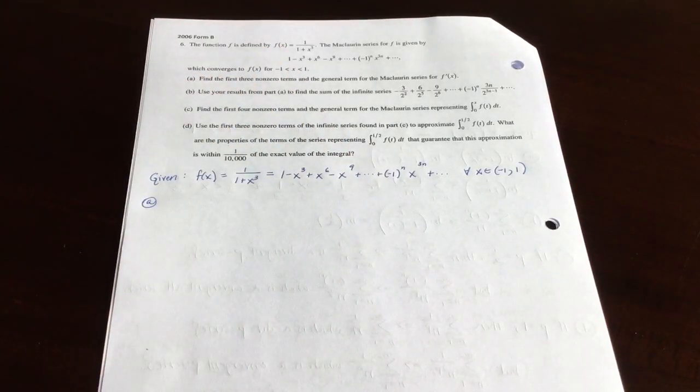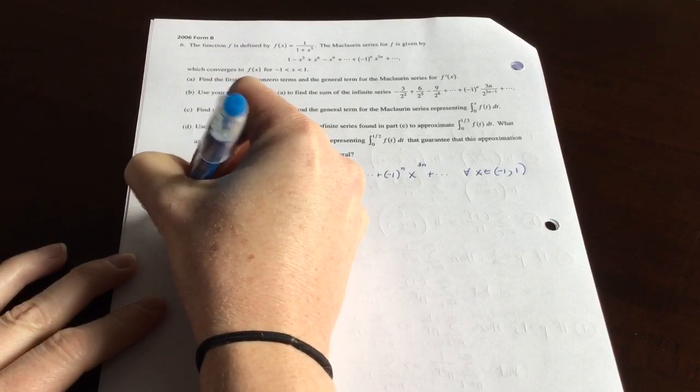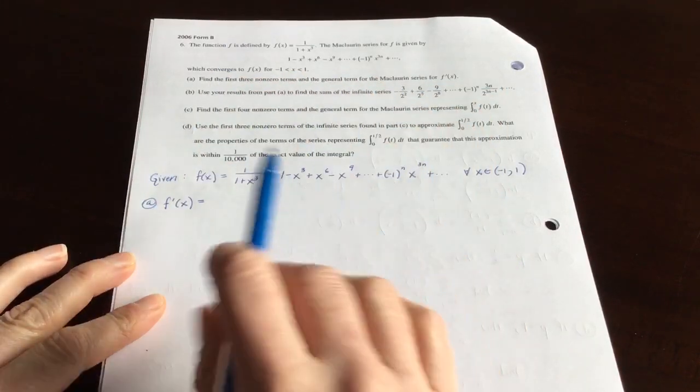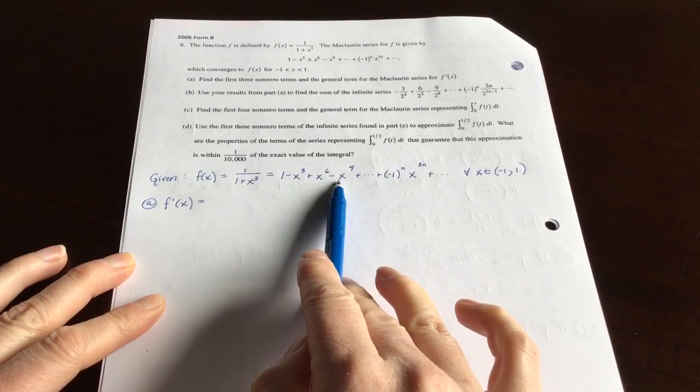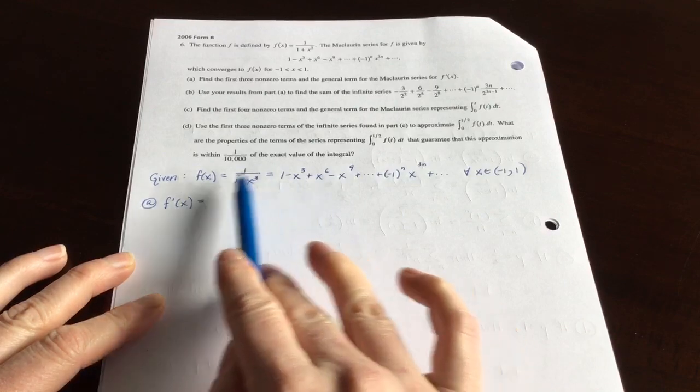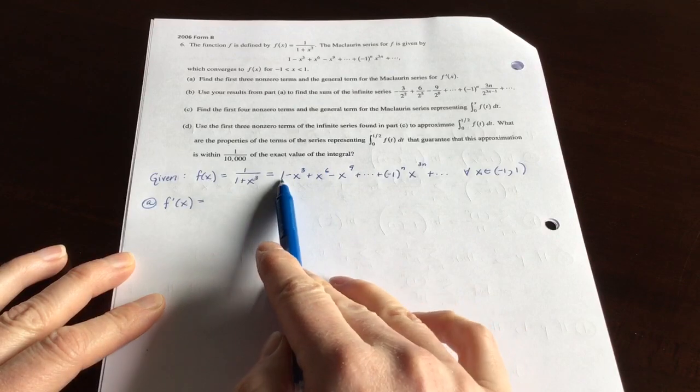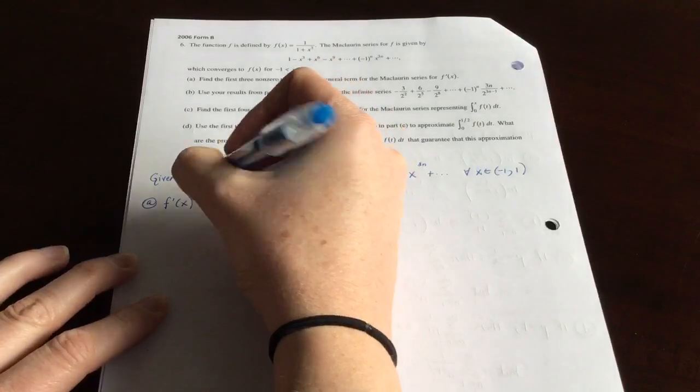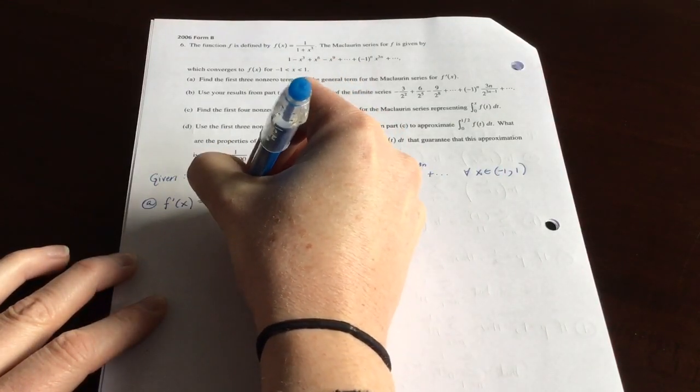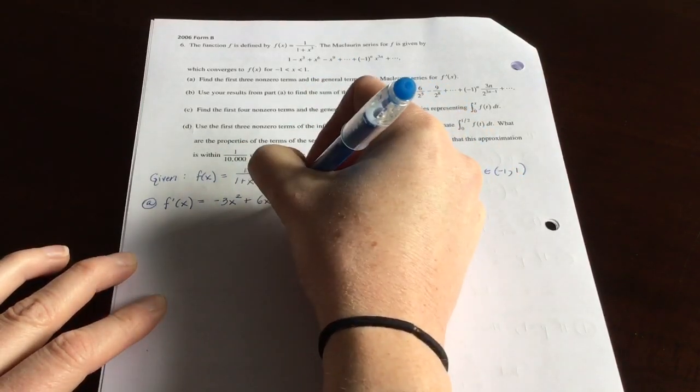It says find the first three non-zero terms and the general term for the Maclaurin series for f prime. So let's go ahead and go about that. So f prime then would be, and I'm going to skip past this and jump to the term by term expansion that was given, and I'm just going to take the derivative of it. I took the derivative of the left side, I'm going to take the derivative with respect to x. So d dx of 1 is 0, d dx of negative x cubed, d dx of x to the 6th, d dx again.